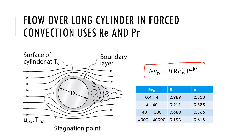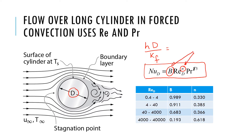Here is the formula for forced convection. NuD is the Nusselt number, where H·D over K_fluid equals the given expression. The constants B and N depend on the range of Reynolds number. People did experiments in different Reynolds number ranges and fitted the data to find B and N, because the nature of the flow changes across ranges.